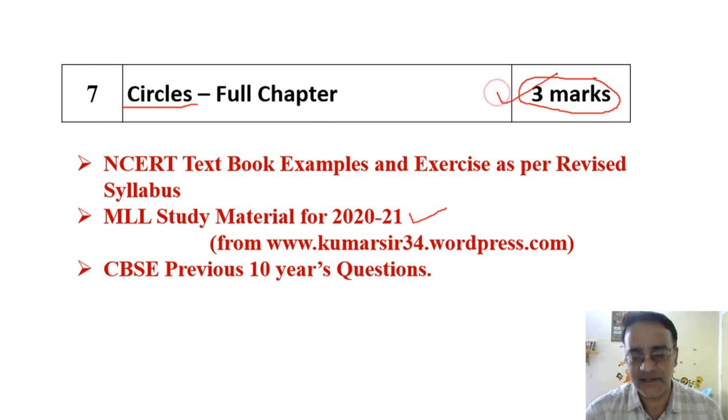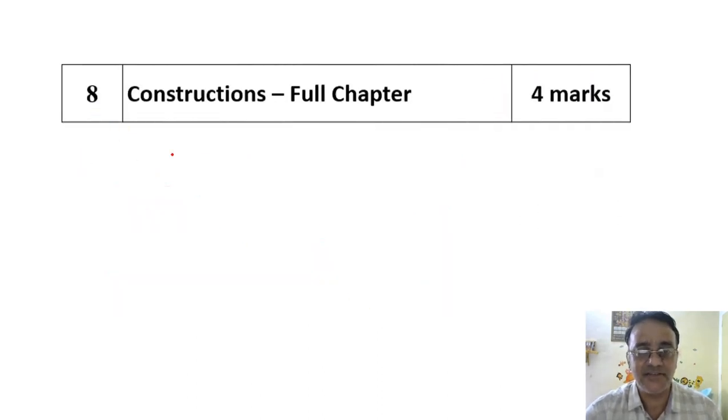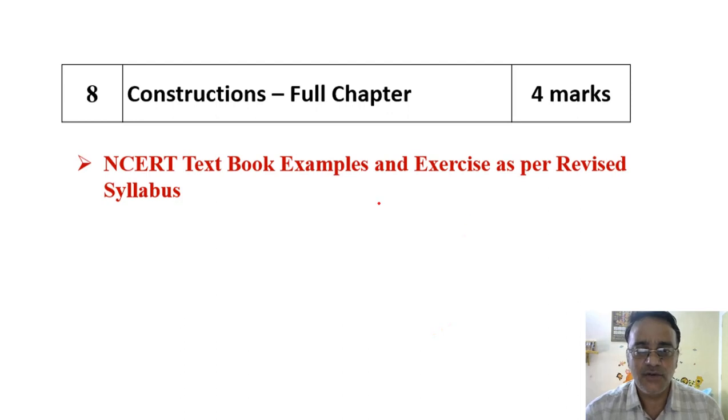Next is Construction. Construction is very scoring chapter, only two sections are there - one is construction of division of line segment in some given ratio, and the second one is tangent, construction of tangent. If you practice these two constructions very well you can easily score four marks. In this, only NCERT ke examples and exercise questions hi karne hai.